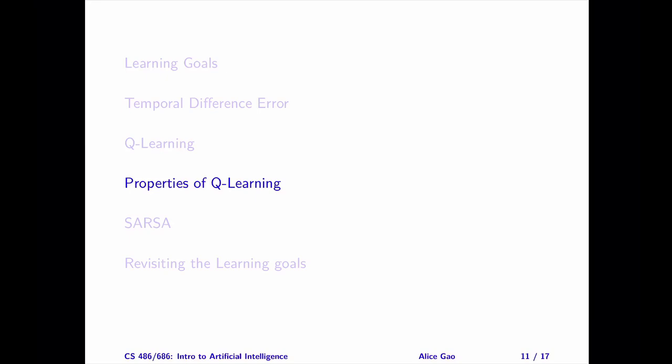That's everything on the properties of the Q-learning algorithm. Let me summarize. After watching this video, you should be able to describe some properties of Q-learning and explain some differences between ADP and Q-learning. Thank you very much for watching. I will see you in the next video. Bye for now.